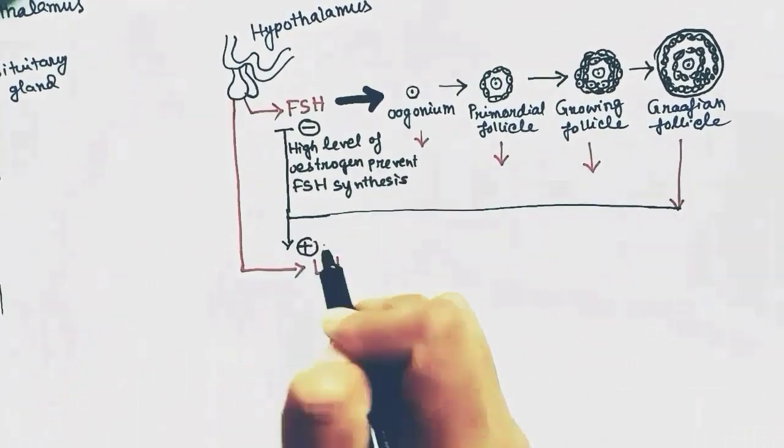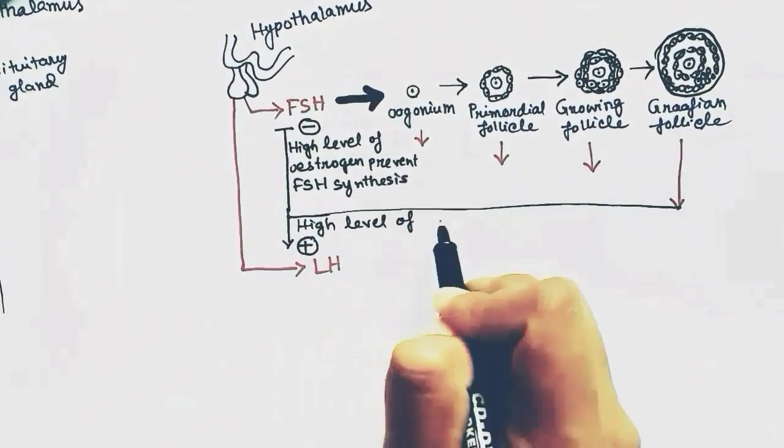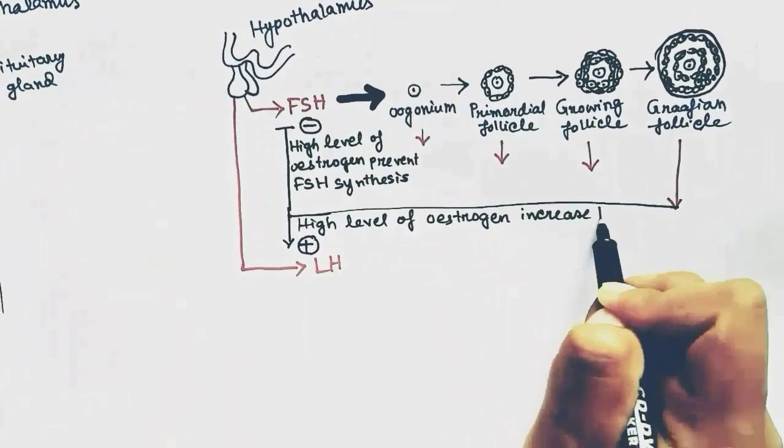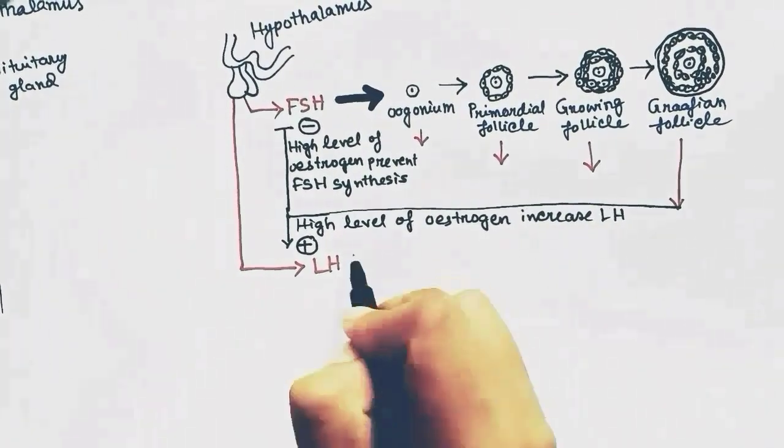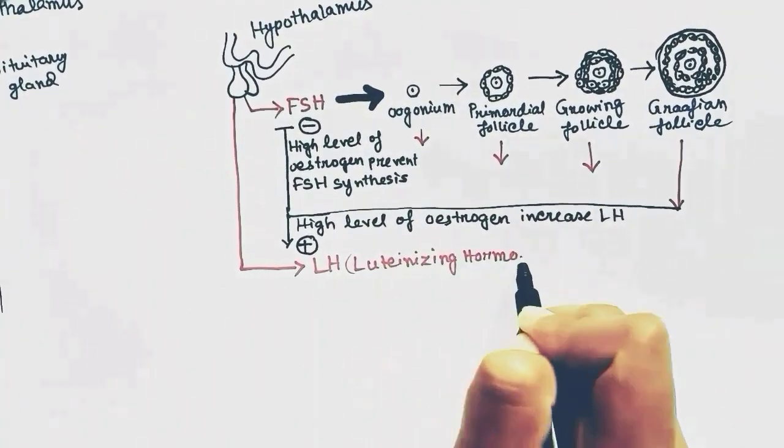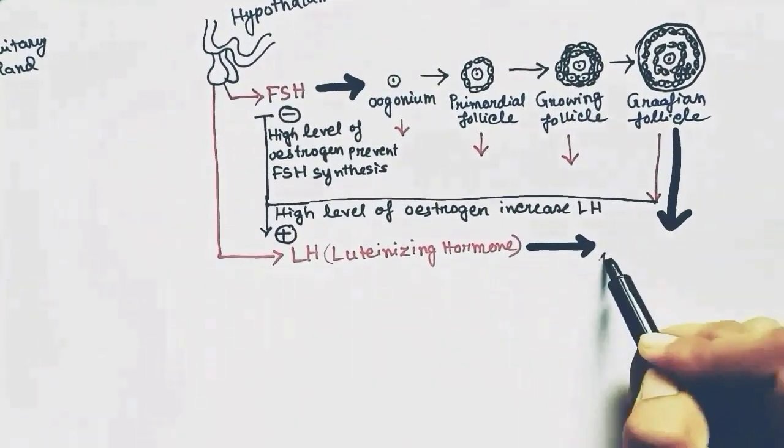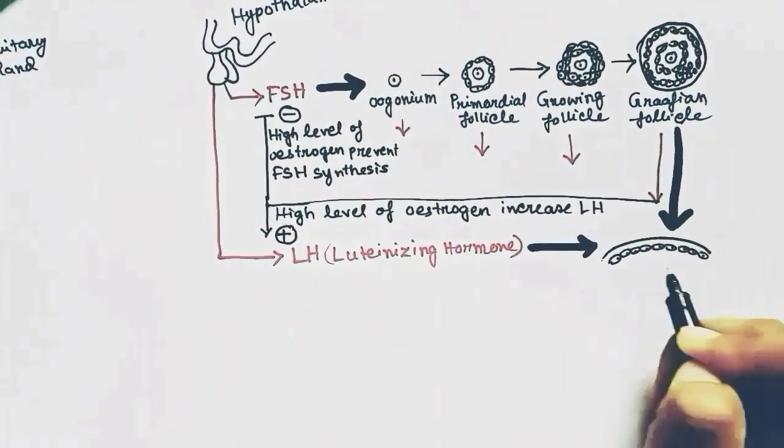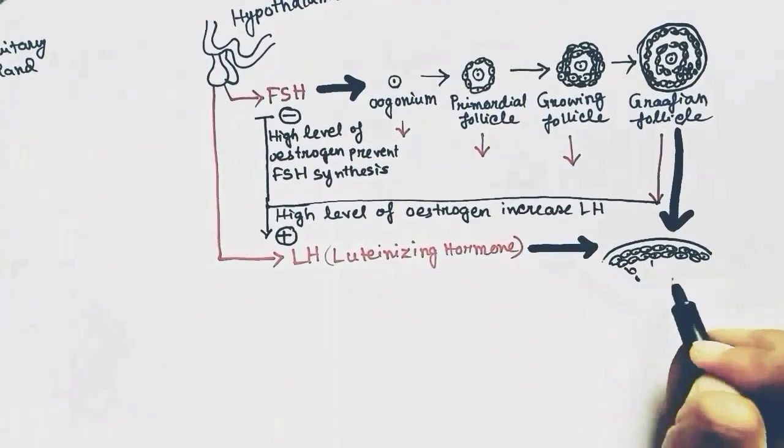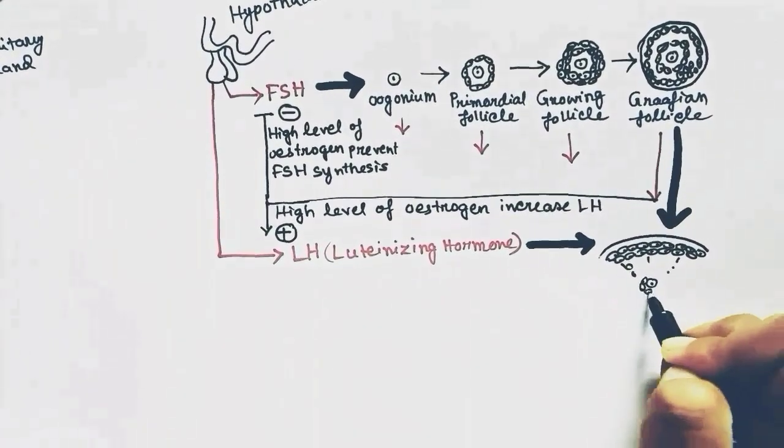High level of estrogen have a positive effect on LH secretion. High level of estrogen increase LH, which stimulates the ovulation of the graafian follicle.